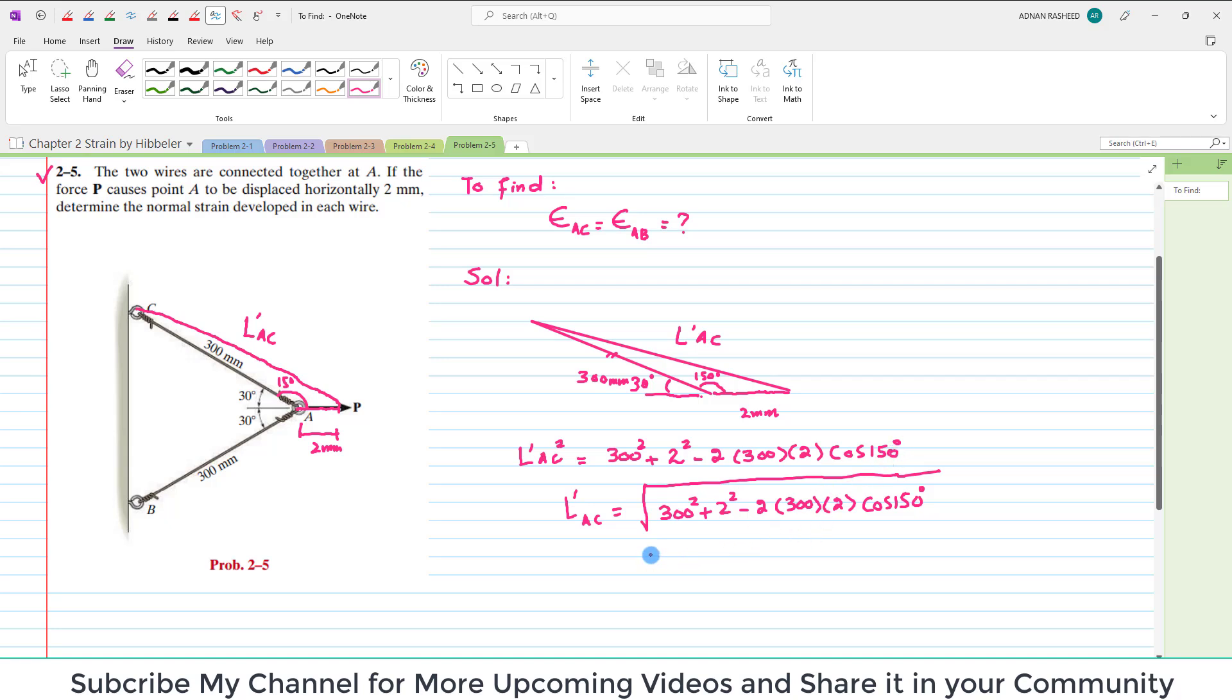So when you solve this, new length L dash A C will be equal to 301.734 mm.